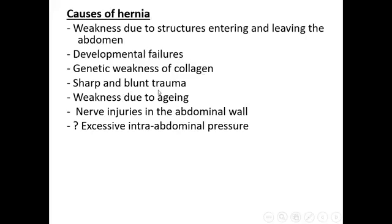Further causes include sharp or blunt trauma to the abdominal wall, weakness due to aging, and nerve injuries to the abdominal wall. For example, a patient who undergoes appendicectomy may suffer injury to the iliohypogastric nerve during the incision, leading to an inguinal hernia later in life. Excessive intra-abdominal pressure is another cause — for instance, in chronic liver disease with ascites, the increased pressure may lead to umbilical hernia formation.